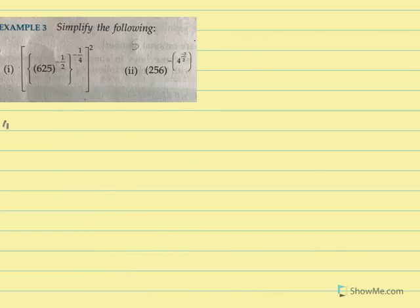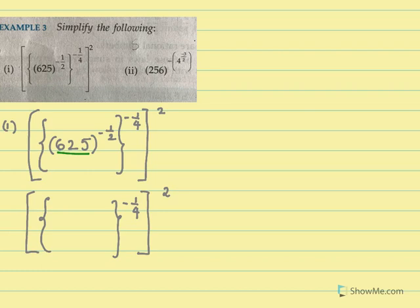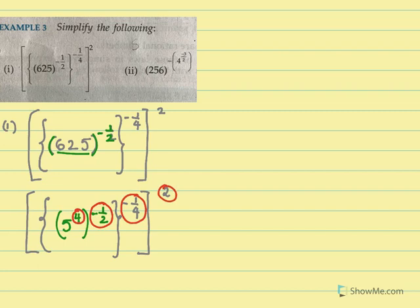Now we need to simplify these two sums. For the first one, we start solving from within the innermost bracket. We keep the outer brackets as they are — the outer bracket raised to minus 1 by 4 and the middle bracket raised to minus 1 by 2. For the innermost bracket, 625 is 5 raised to 4, raised to 1 by 2. Now multiplying all three powers: 4 into minus 1 by 2 into minus 1 by 4 into 2. Minus into minus is plus, so we get 5 raised to plus 1. The answer is 5.